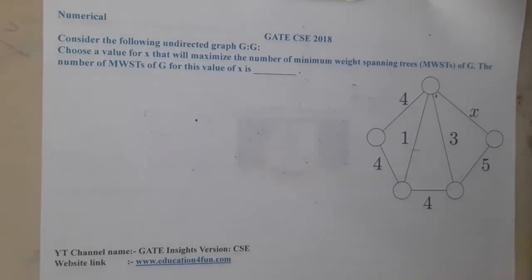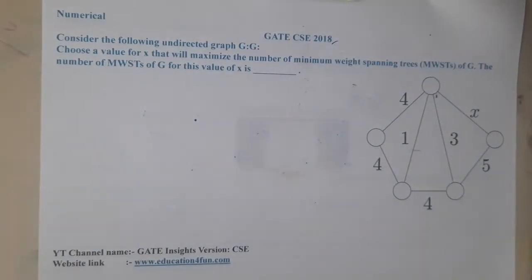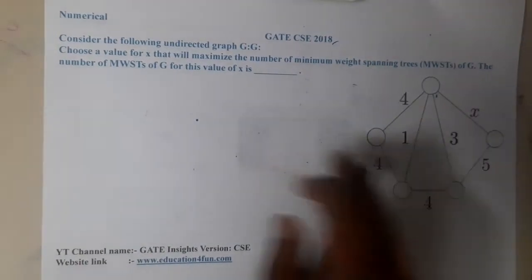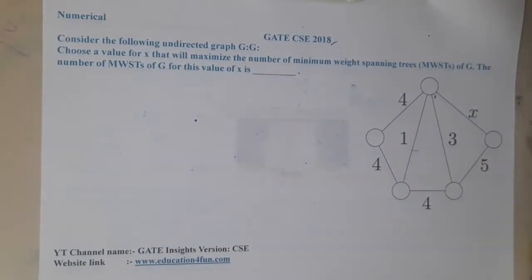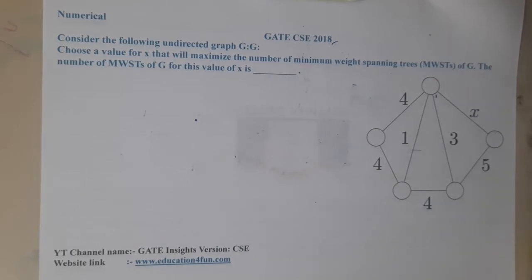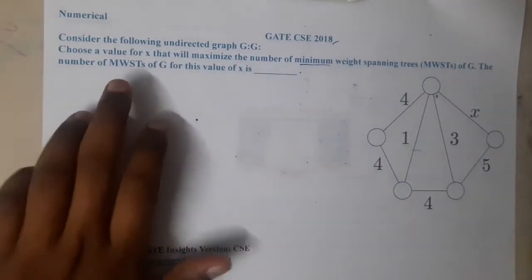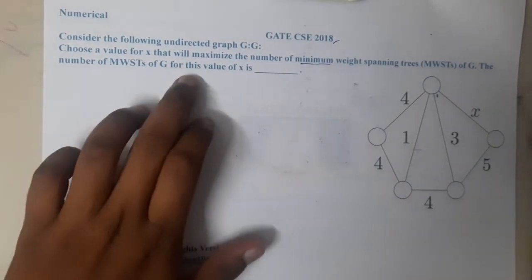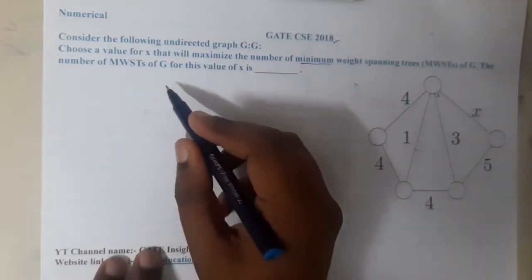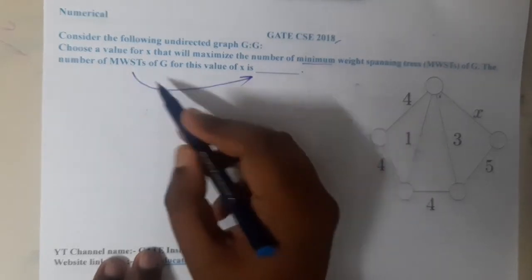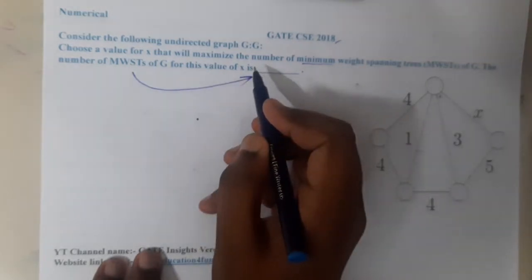Hello guys, we are back with our next lecture. This question belongs to GATE CSE 2018. The question is: consider the following undirected graph G. Choose a value of x that will maximize the number of minimum weighted spanning trees (MWST). We need to get the maximum number of MWSTs, and then determine how many MWSTs of graph G exist for that particular value of x.